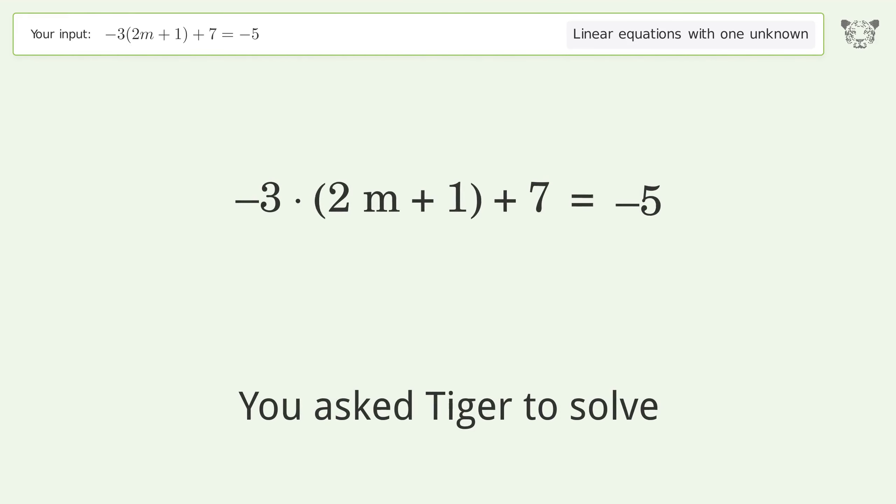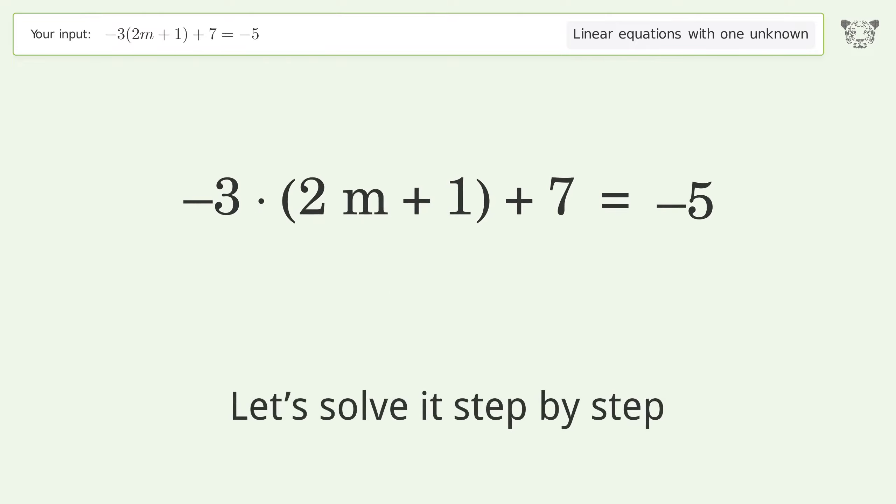You ask Tiger to solve this. This deals with linear equations with one unknown. The final result is m equals 3 over 2. Let's solve it step by step. Simplify the expression.